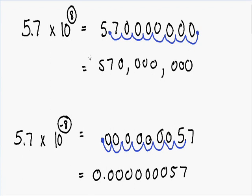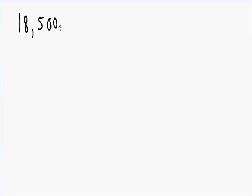Now let's go over some examples of converting regular numbers into scientific notation. Let's say we had the number 18,500,000 and we needed to convert it into scientific notation. Right now, since you don't see a decimal point, you can assume it's on the right. We need to move this decimal point to the non-zero digit that is farthest to the left — which is the number 1. Moving the decimal point in front of that number means we move it 1, 2, 3, 4, 5, 6, 7 times. Now we can place our decimal in front of the leading digit.